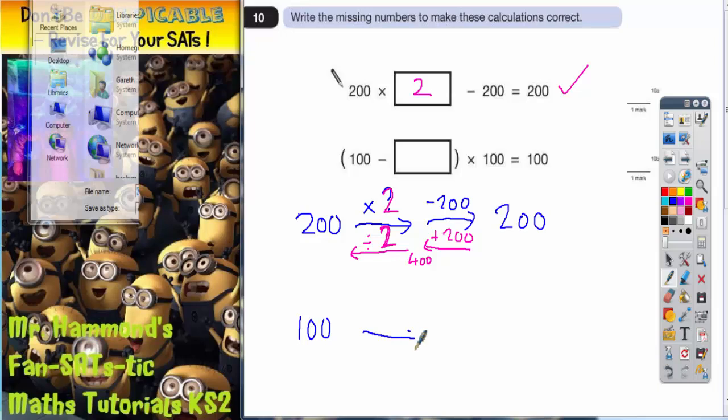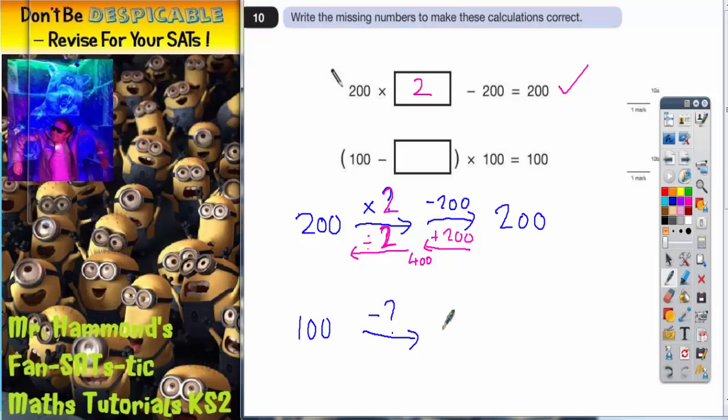We are taking away a mystery number. So let's call that take away question mark. And the next operation on another arrow, we are multiplying by 100. Which is this bit here. And then out pops the answer, which is 100.